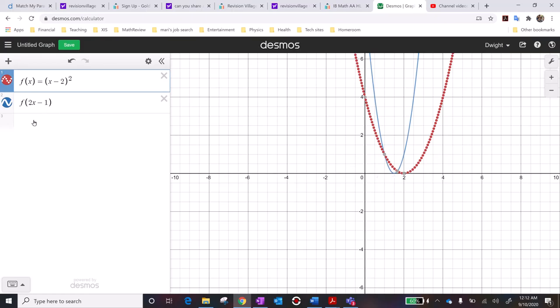So basically what it did, and the easier way to think about this is to think about it as f of, like, if you factor out the constant, 2x minus 1, you can see that, not minus 1, minus 0.5, you can see that it basically translates it, it basically does this first.